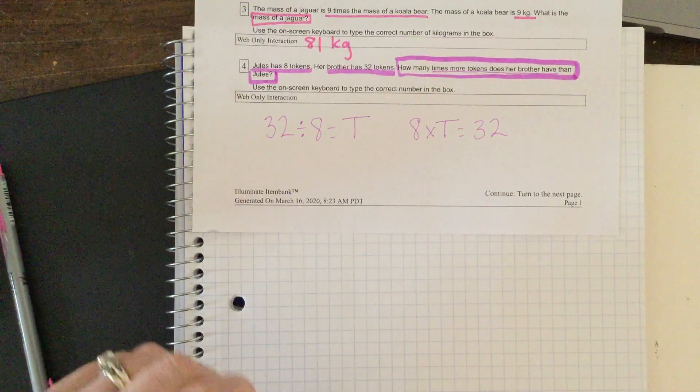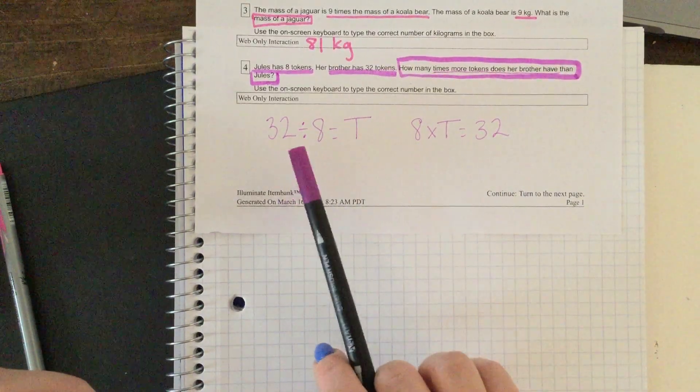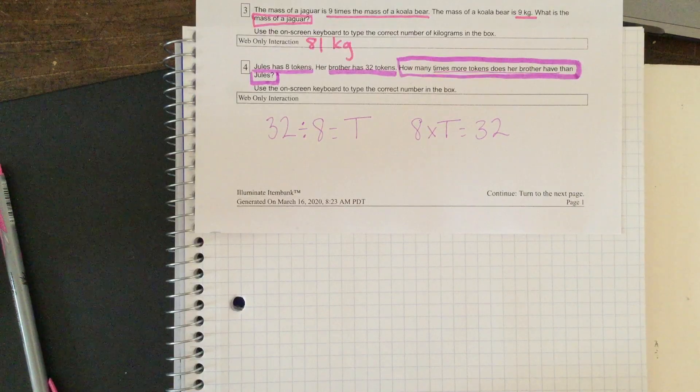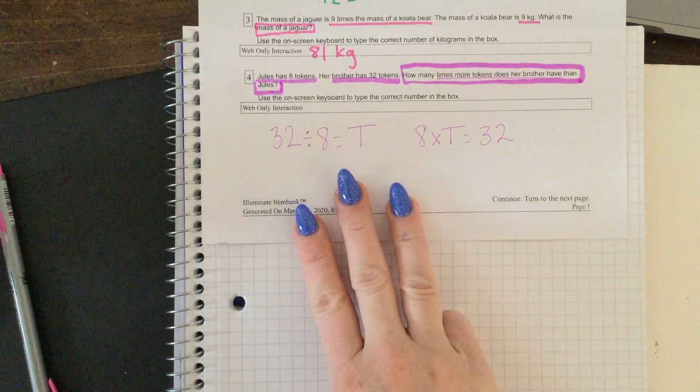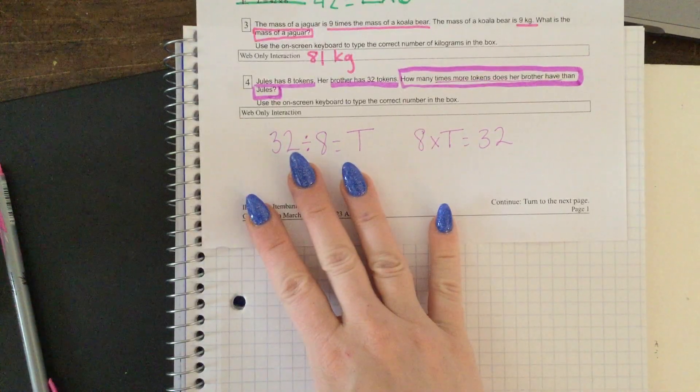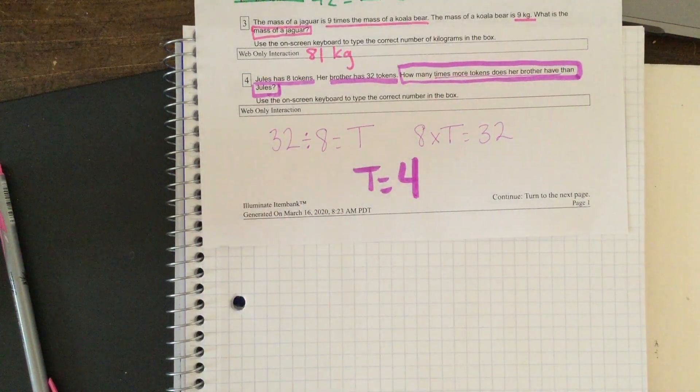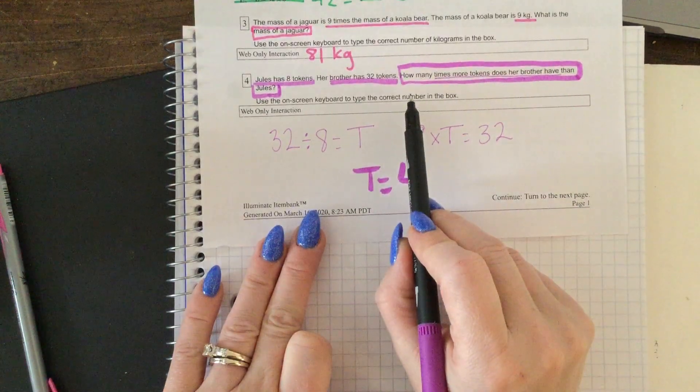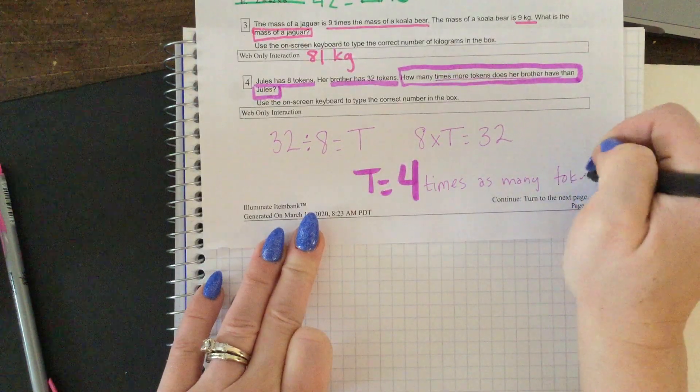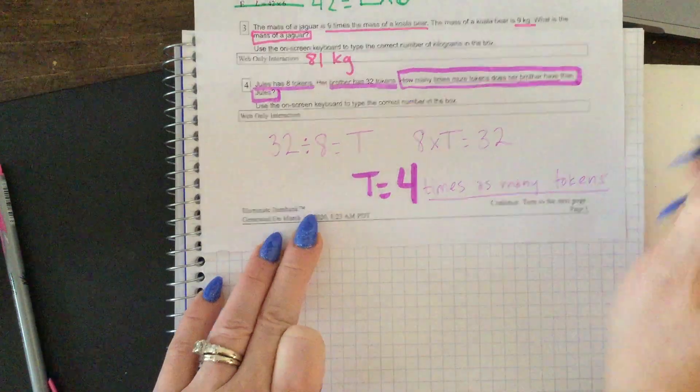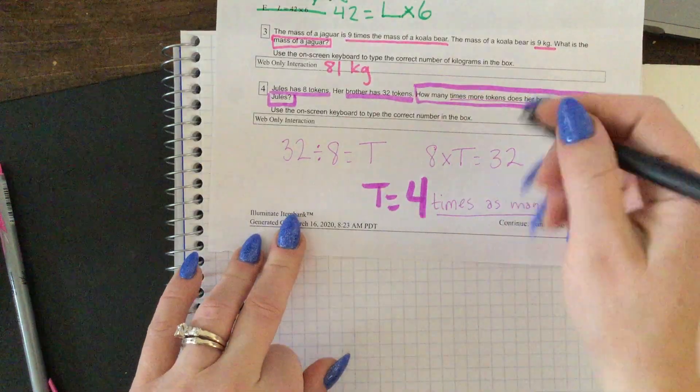All right, welcome back friends. So knowing what you know about multiplication, 8 times T equals 32, or 32 divided by 8 equals T. Let's count by 8: 8, 16, 24, 32. So that means that T equals 4. This means her brother has four times as many tokens. And doesn't that make sense? Because Jules has 8, her brother has 32, and 8 times 4 equals 32.